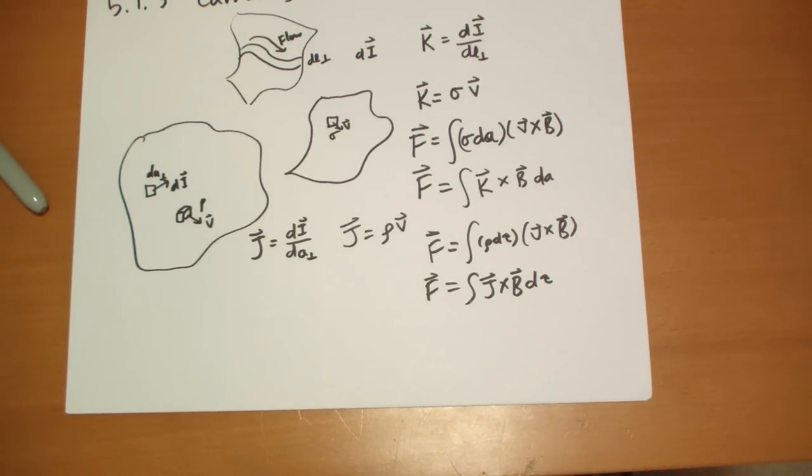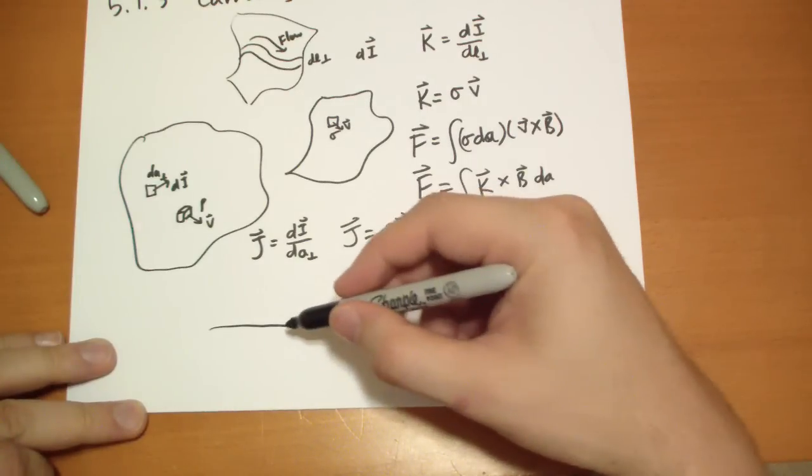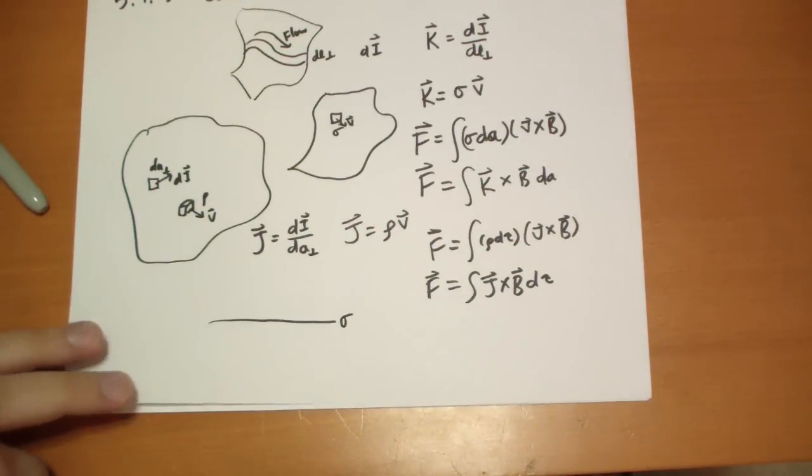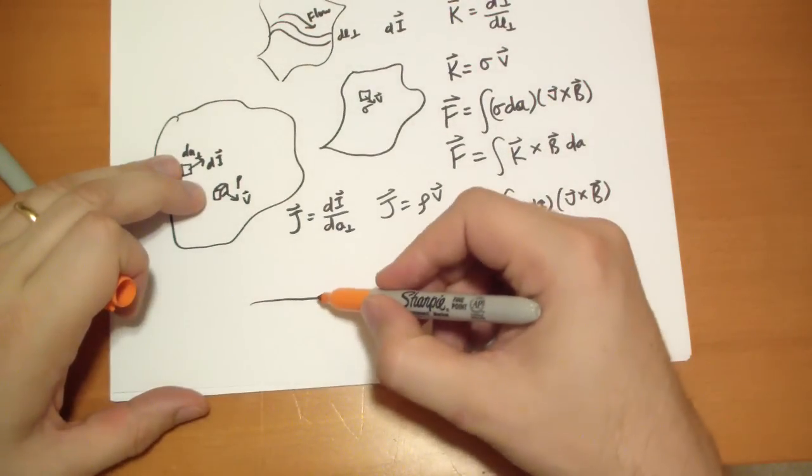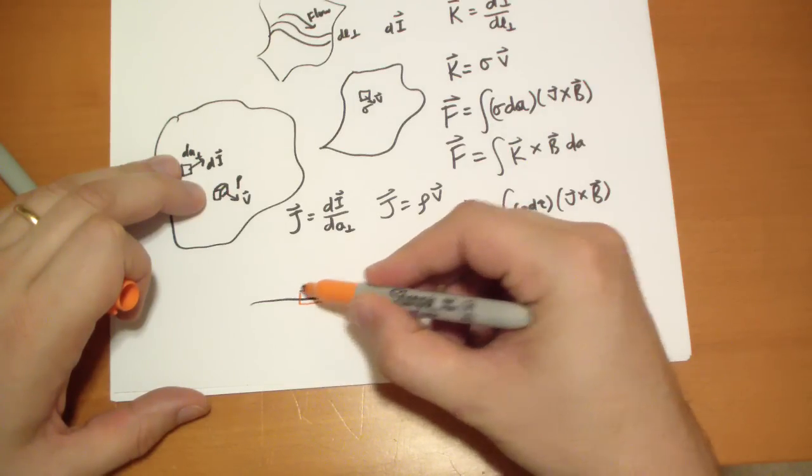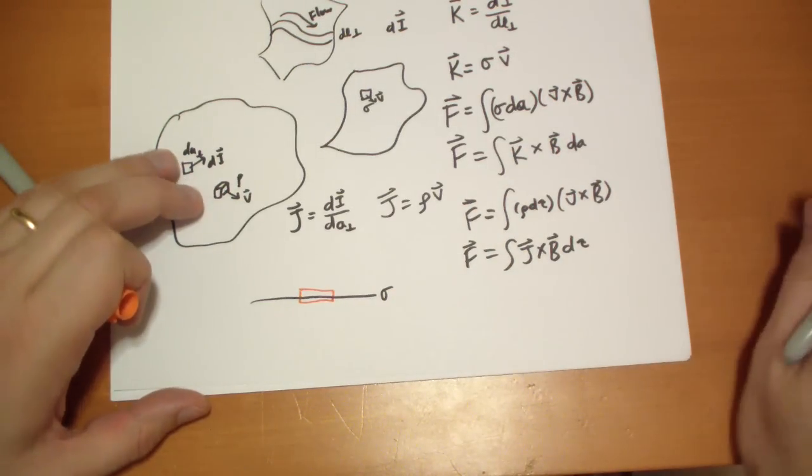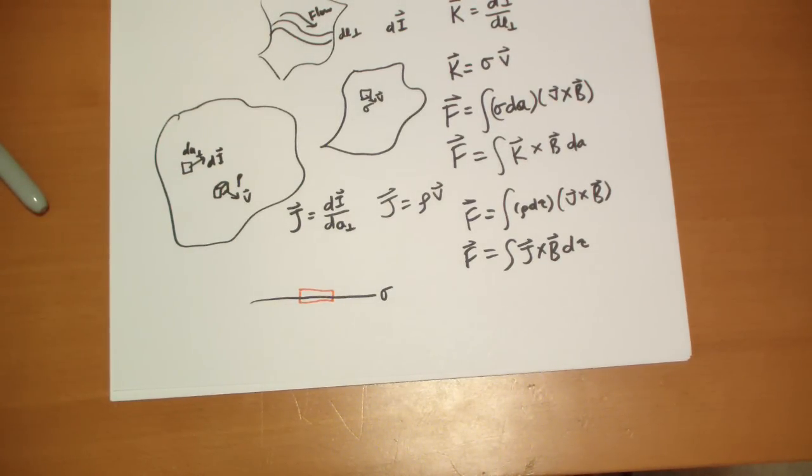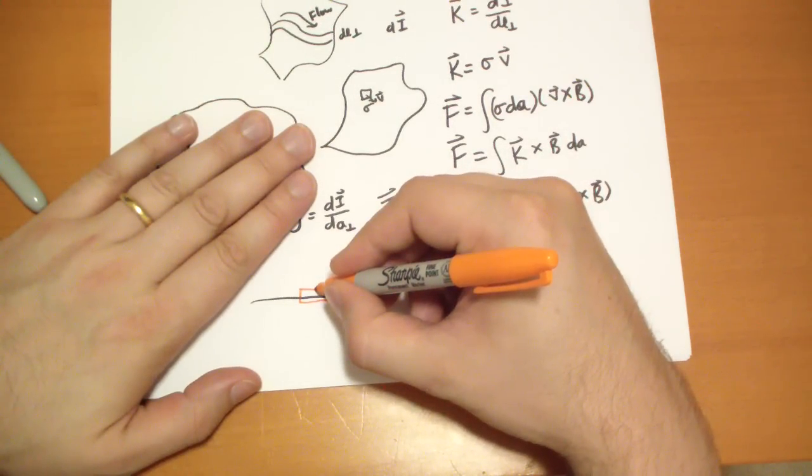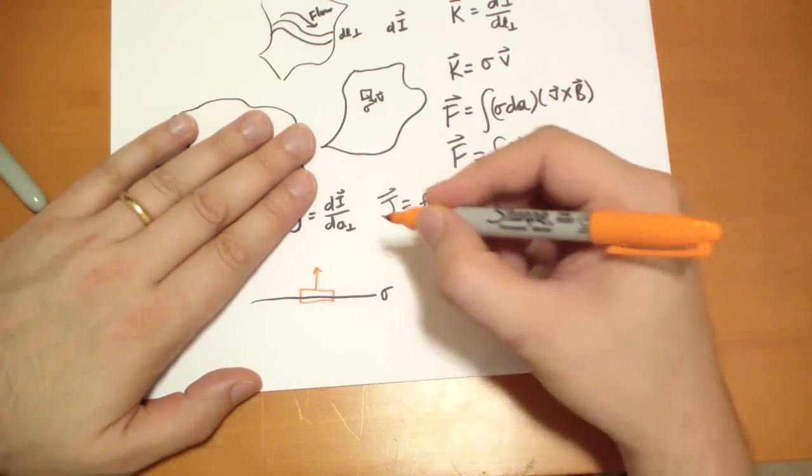So remember back when we did electrostatics, and we had like a surface, and we looked at it on edge, and we go bloop, and it had some surface charge density sigma, and we zoomed in with our supercalculus microscopes, and we drew a box, and we said, what is the electric field at the surface?